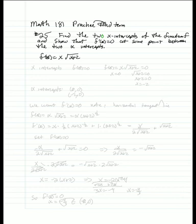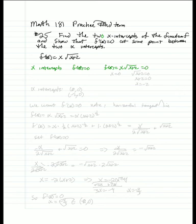So f of x equals x times the square root of x plus 2. For the x-intercepts, that occurs when f of x equals 0. So we set x times the square root of x plus 2 equal to 0. That gives us x equals 0, or the square root of x plus 2 equals 0, which means x plus 2 equals 0, so x equals negative 2. Our x-intercepts are (0, 0) and (-2, 0).